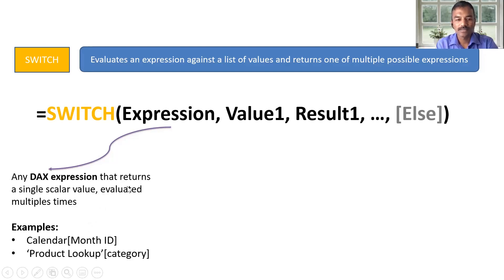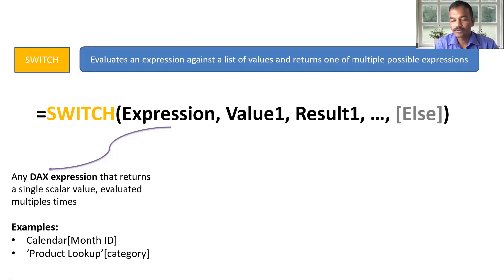For example, we have a calendar month ID. In the month, we have a column with January, February, March. We will create another column where in January we have one display, and in February we have two display.